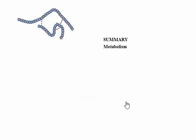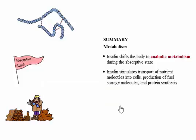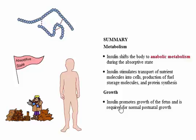In summary, insulin affects both metabolism and growth. It shifts the body to anabolic metabolism during the absorptive state. Insulin stimulates transport of nutrient molecules into cells, production of fuel storage molecules, and protein synthesis. These anabolic processes ensure that there will be a supply of nutrients for the post-absorptive period. Insulin is the growth-promoting hormone during fetal development and is required for normal postnatal growth.